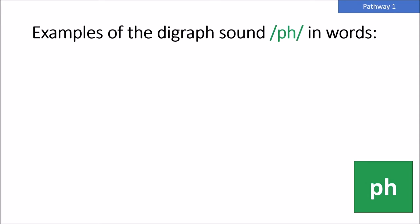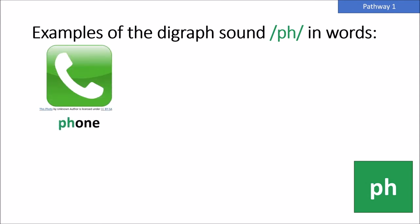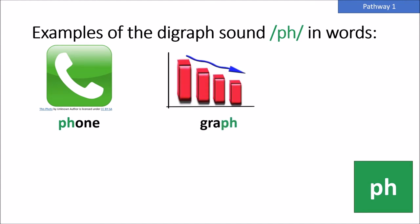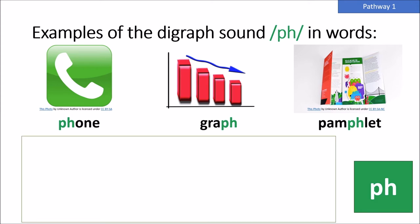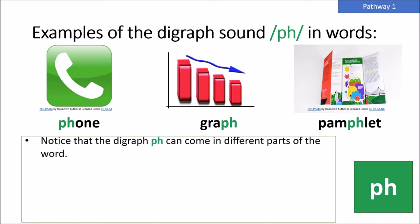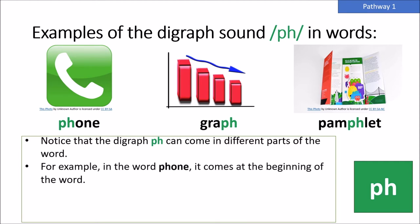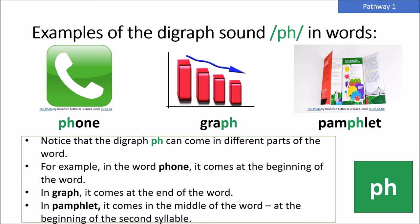Examples of the digraph PH sound in words: phone, graph, pamphlet. Notice that the digraph PH can come in different parts of the word. For example, in the word phone, it comes at the beginning of the word. In graph, it comes at the end of the word. And in pamphlet, it comes in the middle of the word at the beginning of the second syllable.